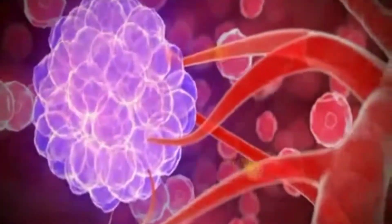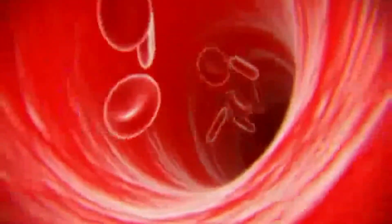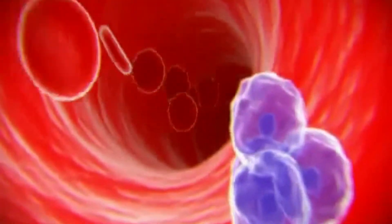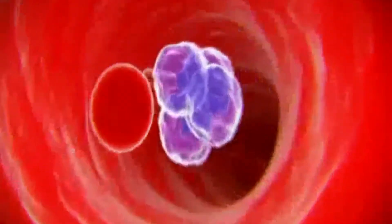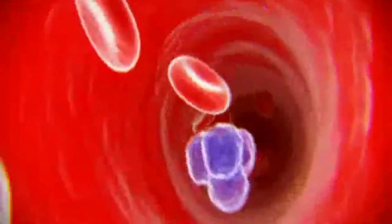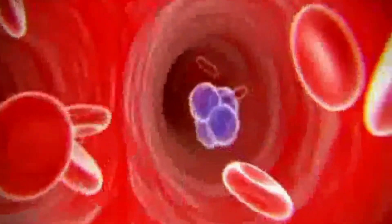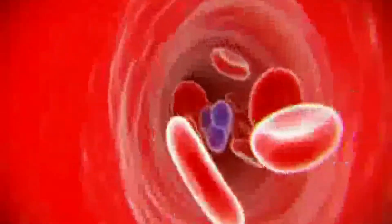As the tumor matures, some of the cells acquire the ability to break away and enter the bloodstream. These cells travel around the body and invade tissues distant from the original tumor where they can form secondary tumors or metastases at a range of sites. The most common site of metastasis for prostate cancer is the bone.